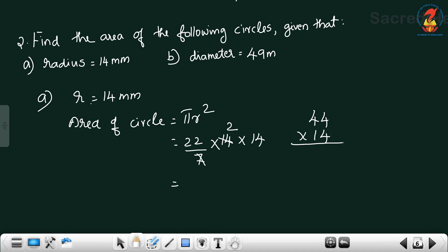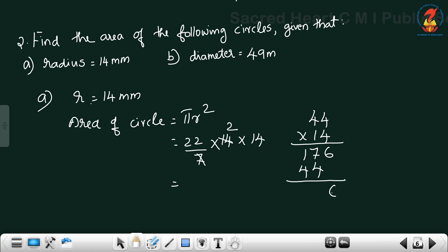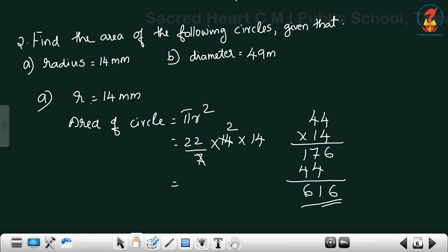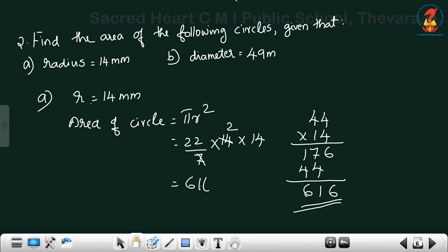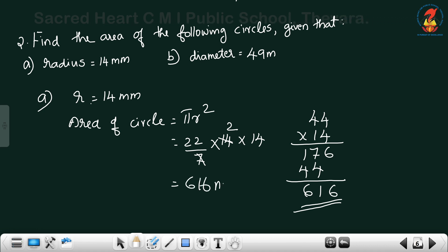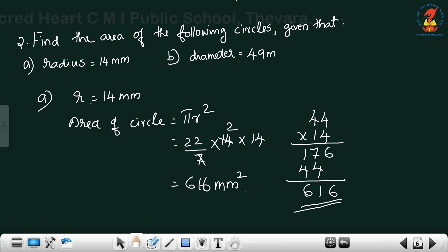Calculating 44 into 14: 4 fours are 16, carry 1; 4 fours are 16, plus 1 is 17 — giving 616. This is the area, with unit millimeter square.